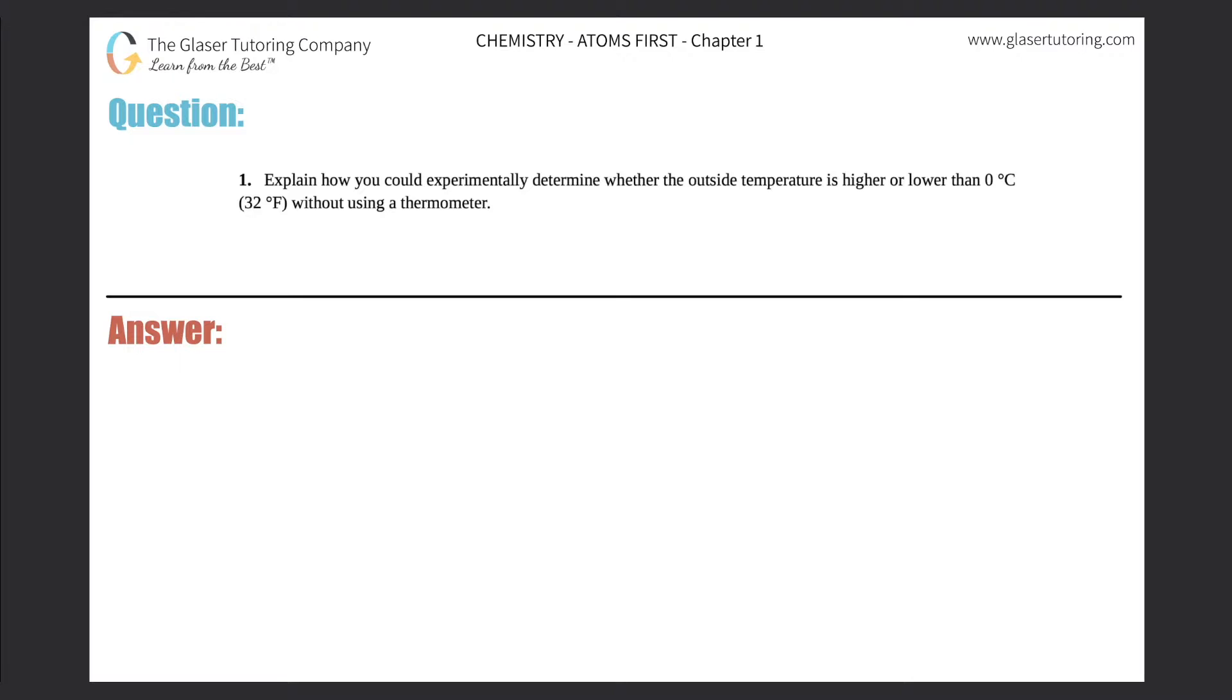Number one: explain how you could experimentally determine whether the outside temperature is higher or lower than zero degrees Celsius, which is 32 degrees Fahrenheit, without using a thermometer. Okay, so basically we just have to think of an experiment in order to test if the outside temperature is either higher or lower than zero degrees Celsius.